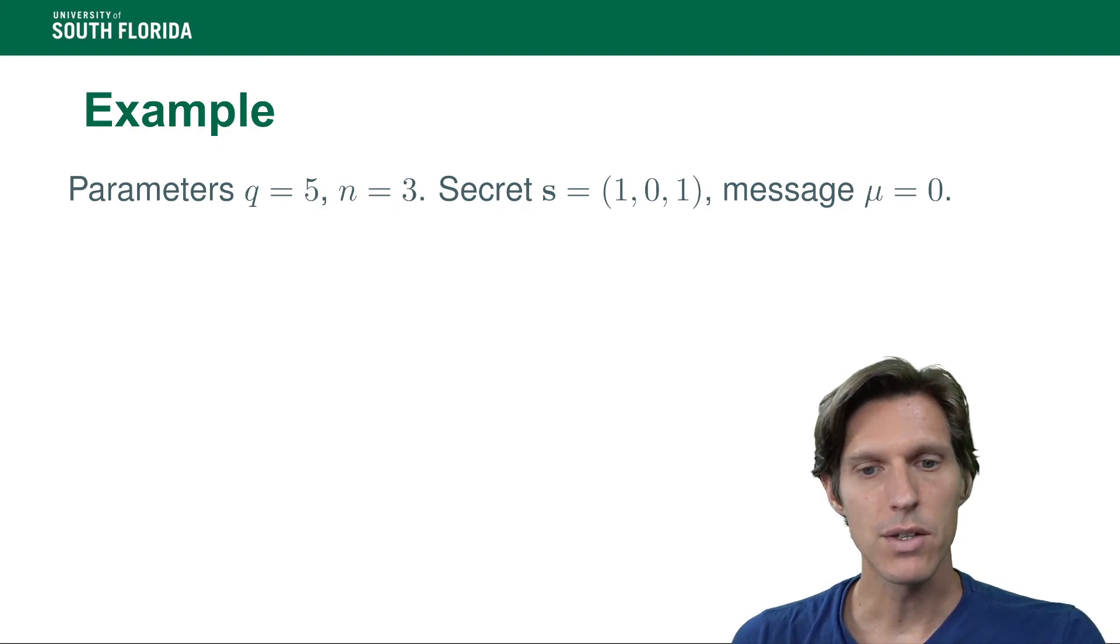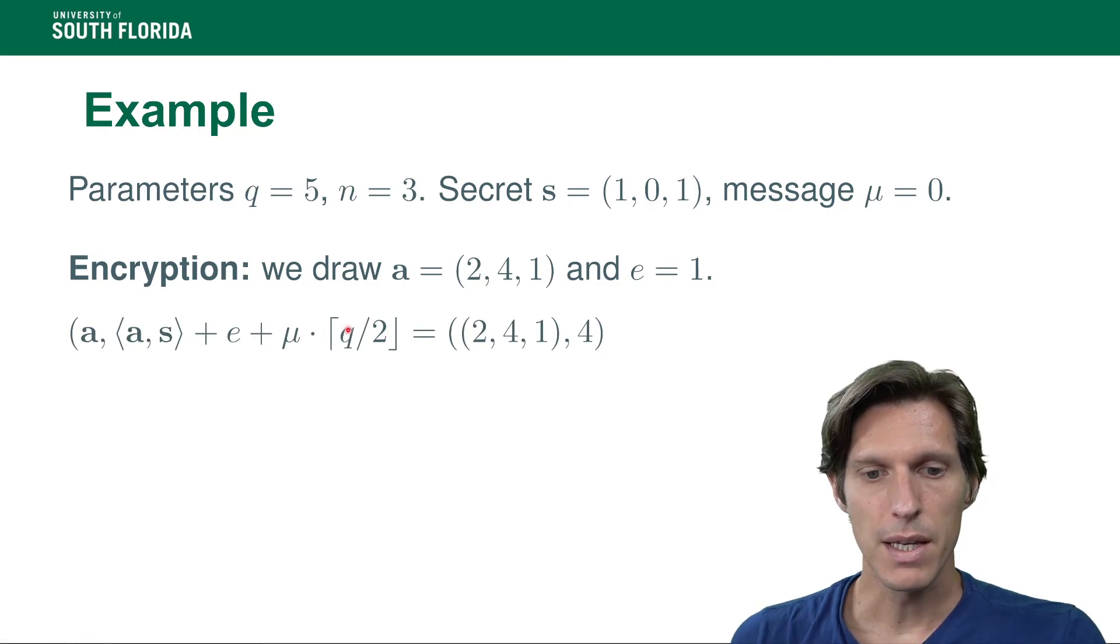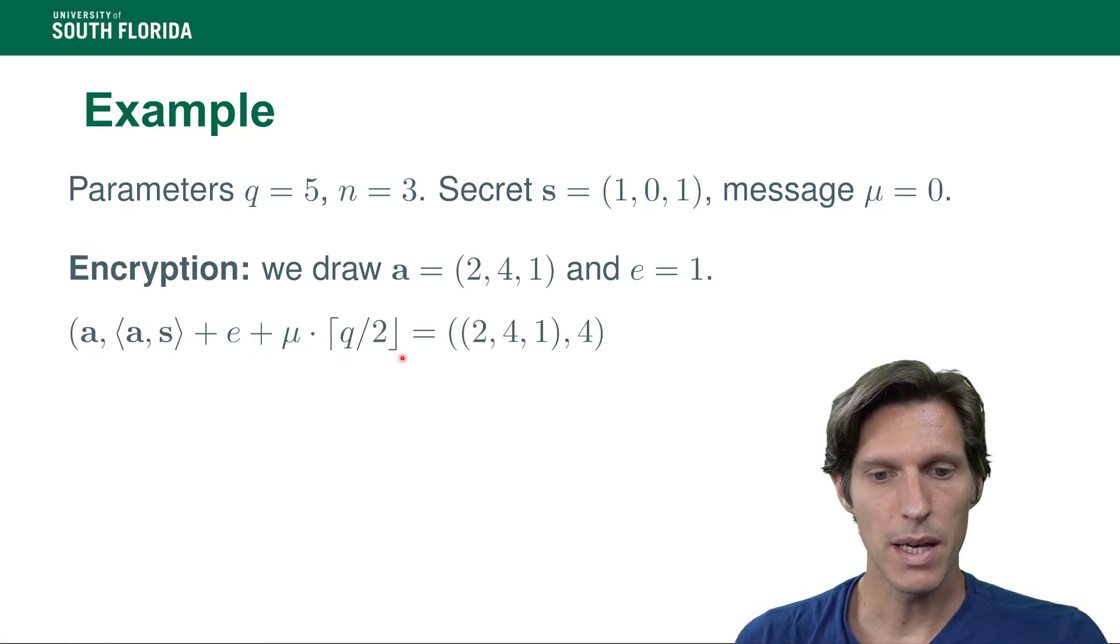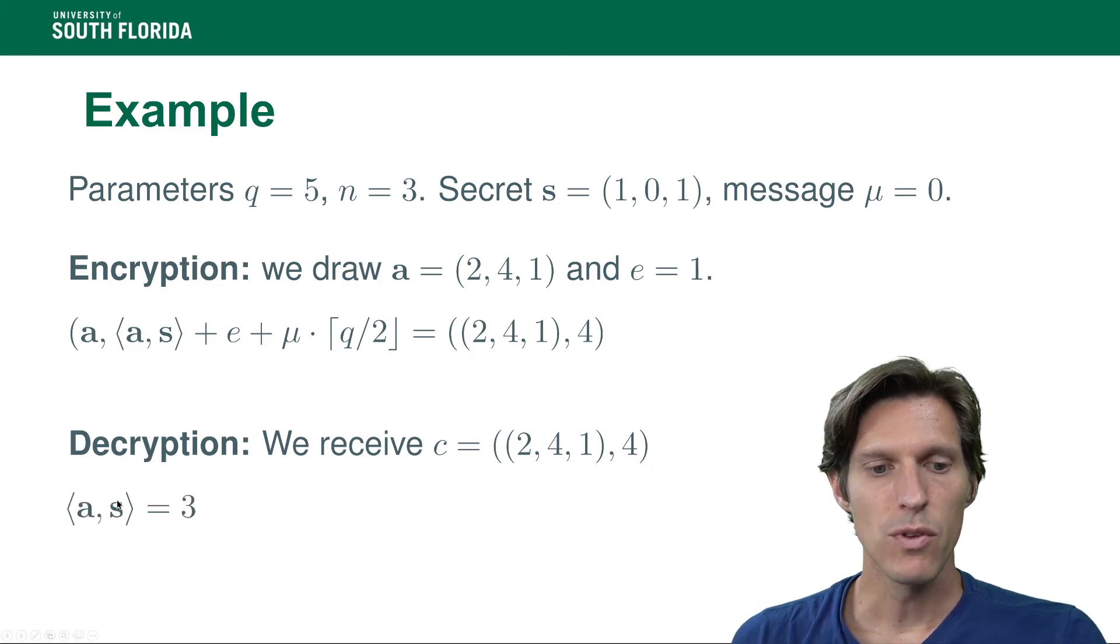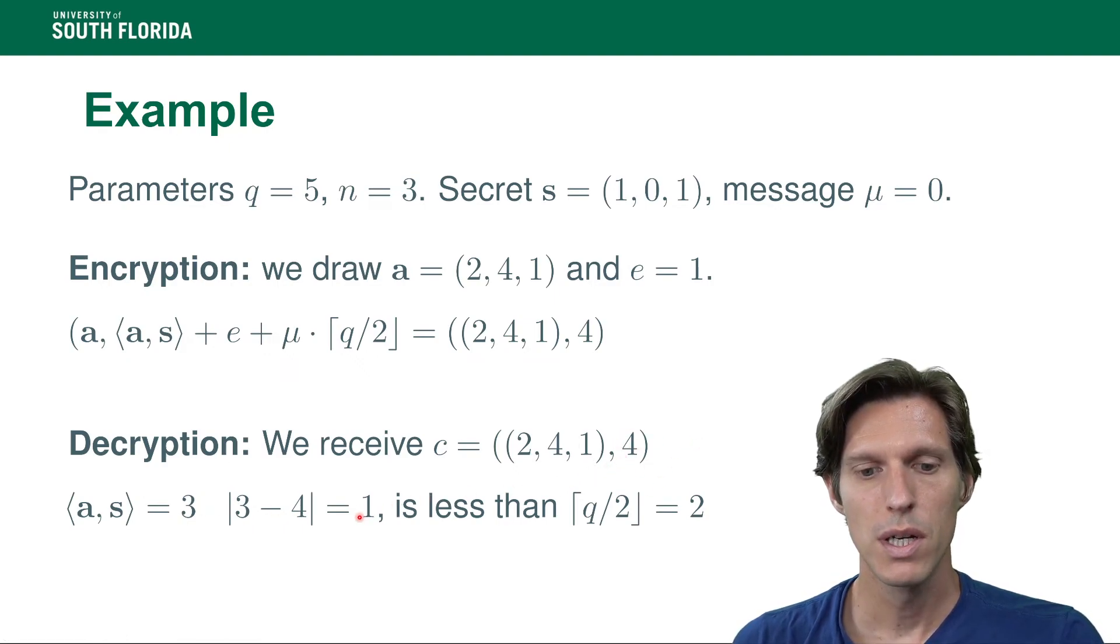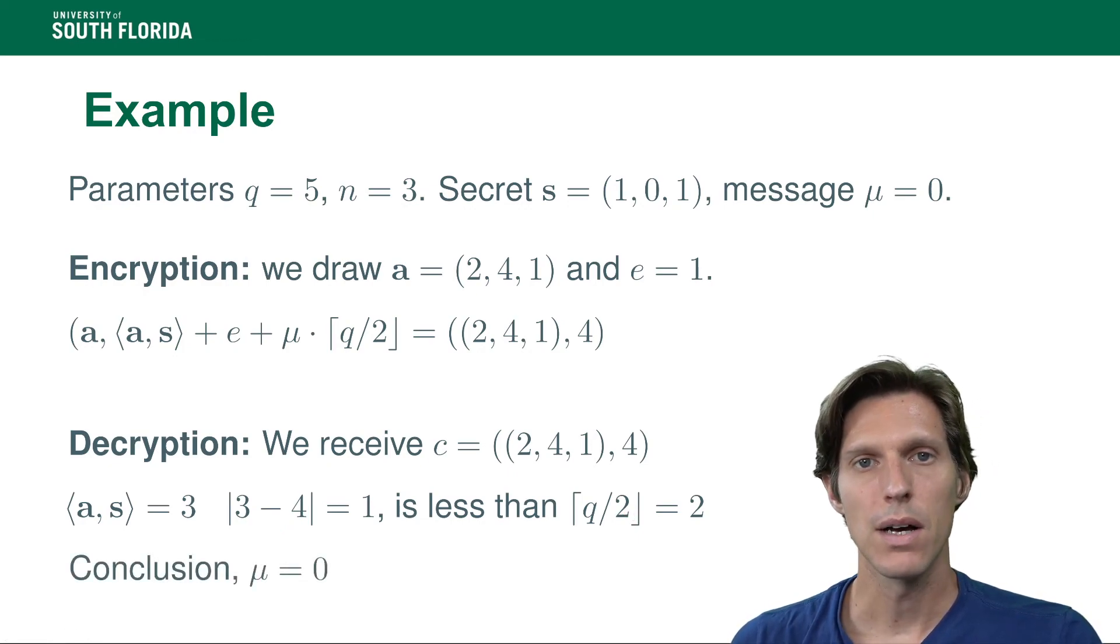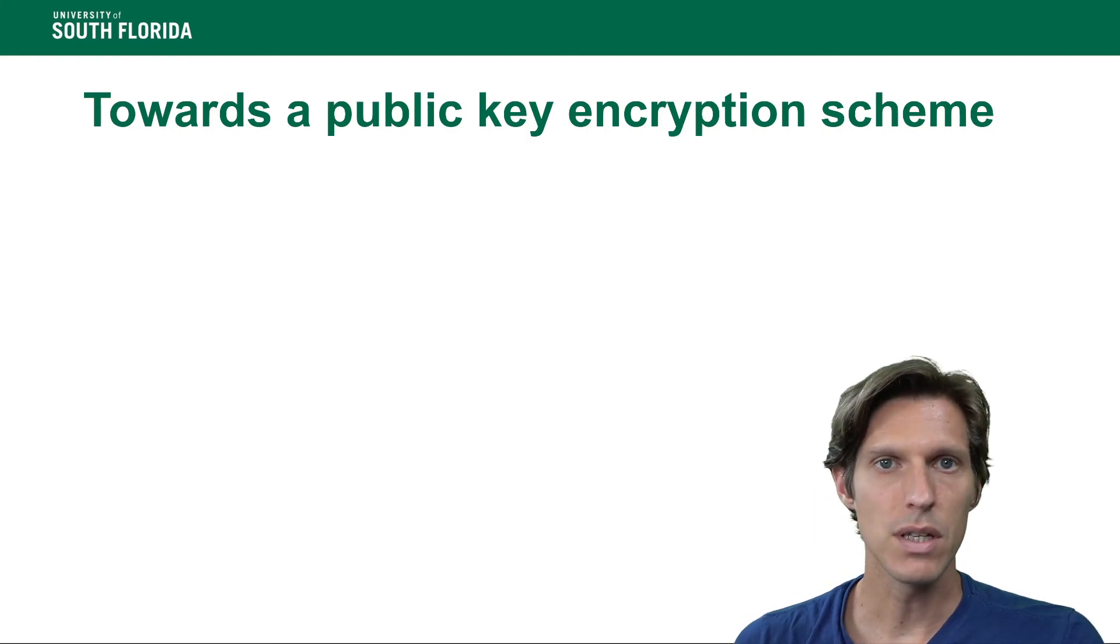So for example if q equals 5, n equals 3, and then this is the secret. For message mu equals 0 we encrypt by drawing this vector for example at random and then an error which is in this case one, and then here is what we get so a times s plus e plus mu, so that will be four. And then to decrypt, so when we receive this element here, we first calculate a dot s which is three, and then we subtract three from four and retrieve one, and since it's less than q over two we deduce that the message was zero. Now this decryption procedure will be the same in the public key variant. It's just the encryption and the key generation that is going to be different.